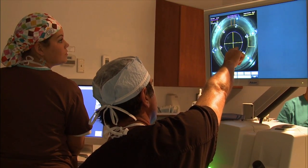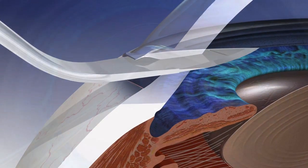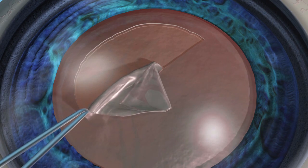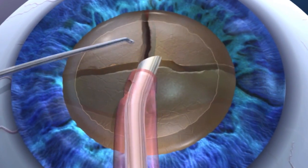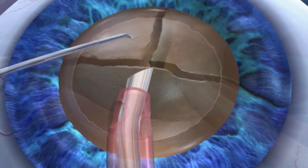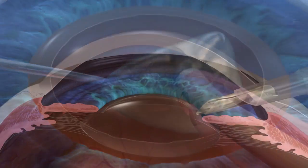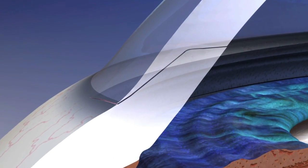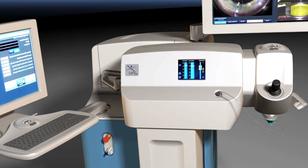Cataract surgery involves corneal incisions, capsular excess — a circular hole in the capsular bag — lens fragmentation, phacoemulsification, intraocular lens insertion, and incision closure. The LensX laser can assist with some of the most challenging steps.